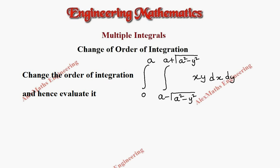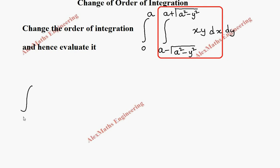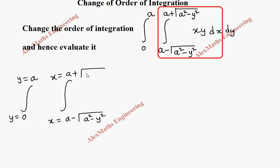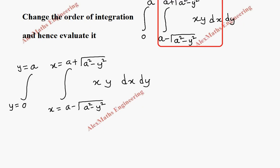Hi students, this is Alex. In this video we are going to change the order of integration and evaluate it. In this problem the order of integration given is first with respect to x, then with respect to y. Let's rewrite this integral: the limit of y is from 0 to a, and the limit of x is from a minus root of (a squared minus y squared) to a plus root of (a squared minus y squared), with integrand xy dx dy.